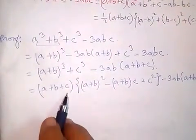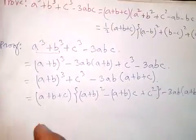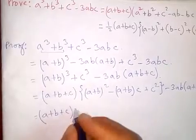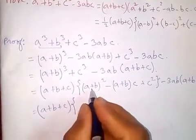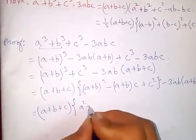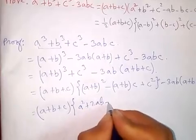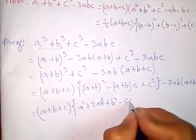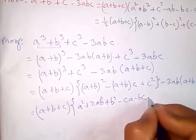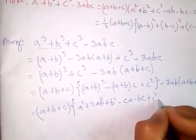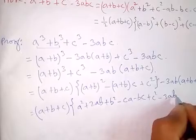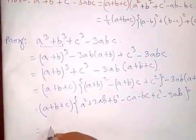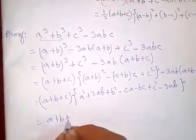We can see the common factor (a + b + c), so let's factor it out. Expanding (a + b)²: a² + 2ab + b², then opening the bracket gives minus ca - bc + c², minus 3ab, all times (a + b + c).